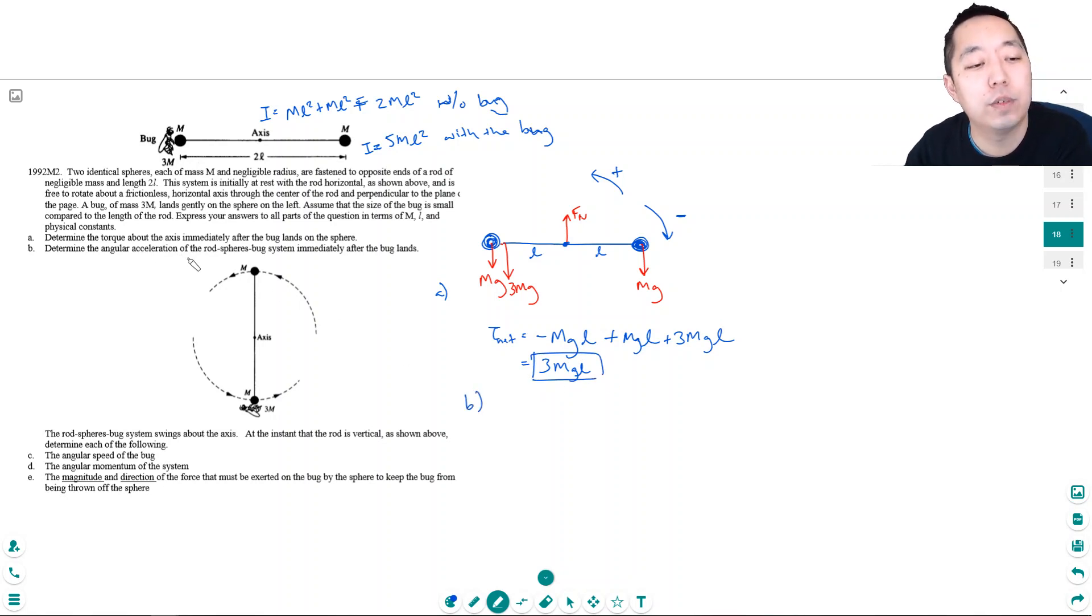Part B: Determine the angular acceleration of the rod-sphere-bug system immediately after the bug lands. Once the bug lands, the net torque is equal to I·alpha. The rotational inertia is 5ml squared times alpha, and that equals 3mg·l.